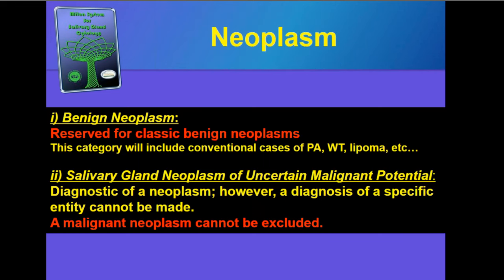Now let's turn to the neoplasm category — a very important category in the Milan system that will represent probably a majority of salivary gland FNAs. There are two subcategories. Number one: neoplasm benign, reserved for classic benign salivary gland tumors including conventional cases of pleomorphic adenoma, Warthin tumor, lipoma, schwannoma, and others. The second group, salivary gland neoplasm of uncertain malignant potential — also known as SUMP — will be diagnostic of a neoplasm; however, a diagnosis of a specific entity cannot be made, and a malignant neoplasm cannot be excluded.